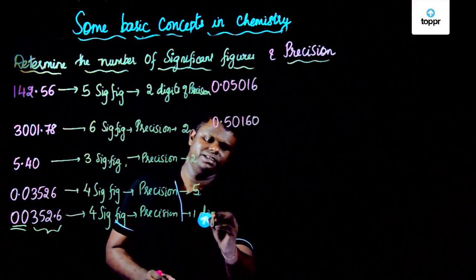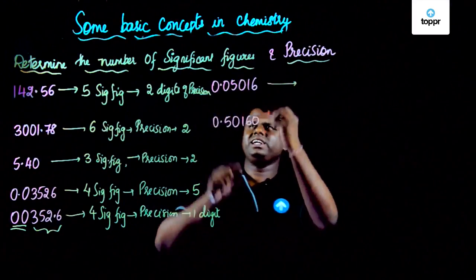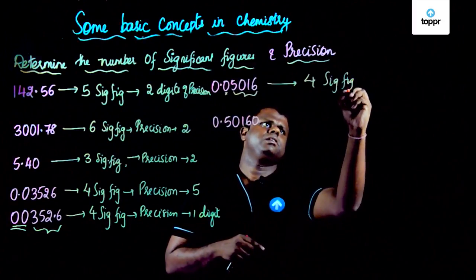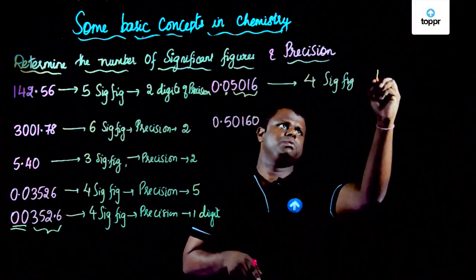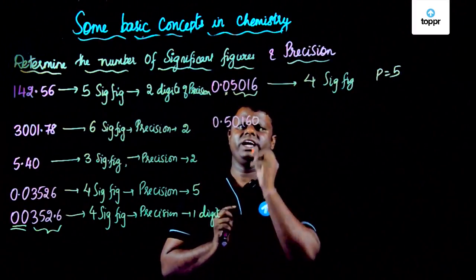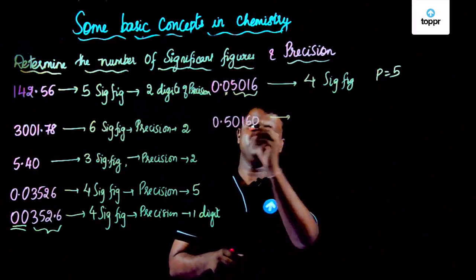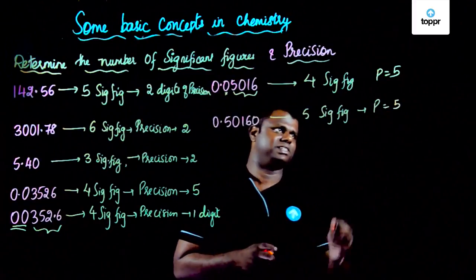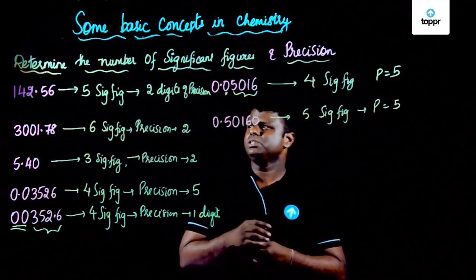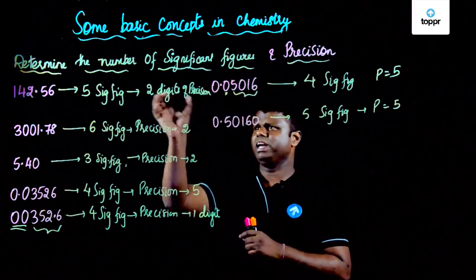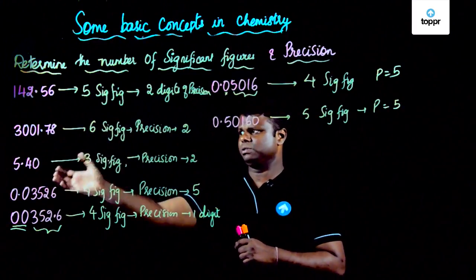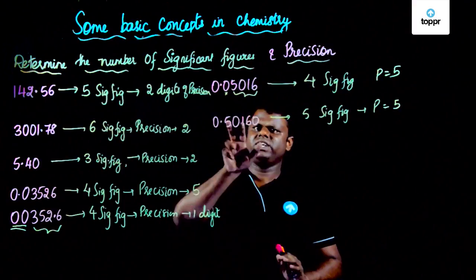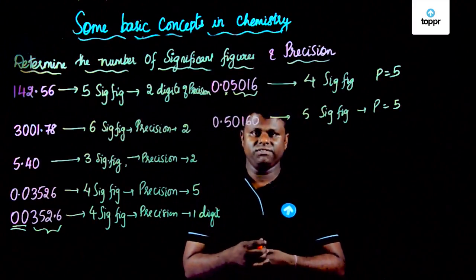In the next example, these zeros at the front don't make any sense — you would simply read 352.6. So these are four significant figures, and the precision is only one digit. In the following case, this zero is not significant, but these four digits are, giving four significant figures and precision of five decimal places. Finally, with both terminal zero and enclosed zero present, this is five significant figures and the precision is up to five decimal places.